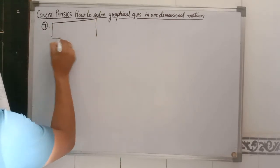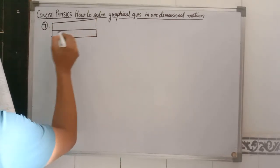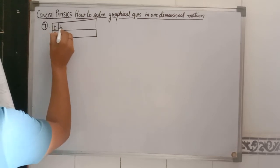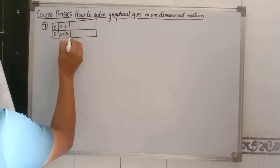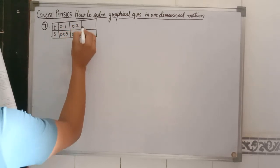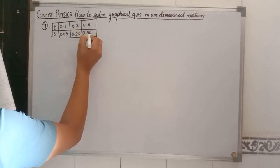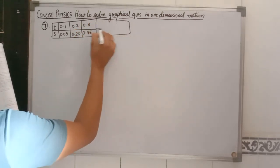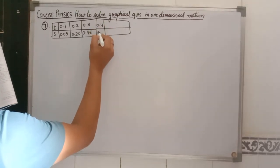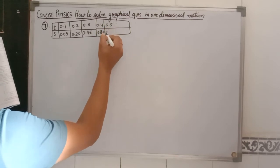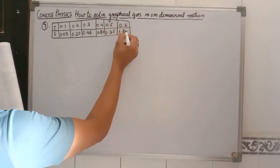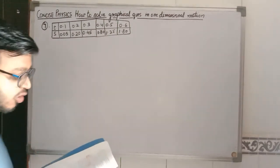The table gives time in seconds and displacement in meters with the following values: time 0.1 s → displacement 0.05 m; 0.2 s → 0.20 m; 0.3 s → 0.45 m; 0.4 s → 0.80 m; 0.5 s → 1.25 m; 0.6 s → 1.80 m. We are asked to draw a displacement-time graph and state whether the motion is uniform or non-uniform.